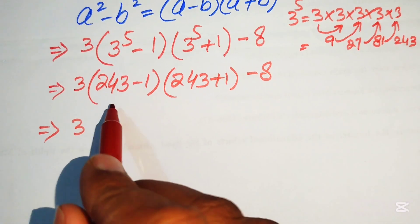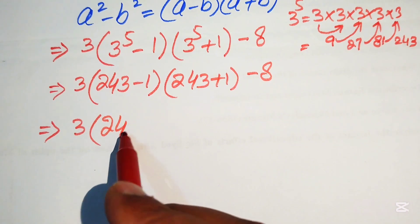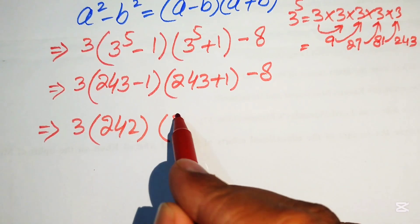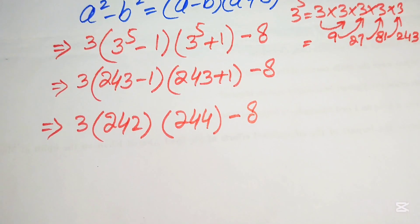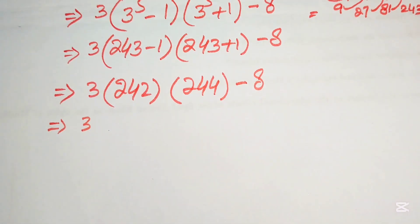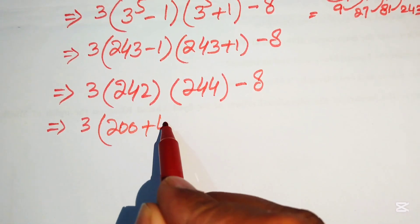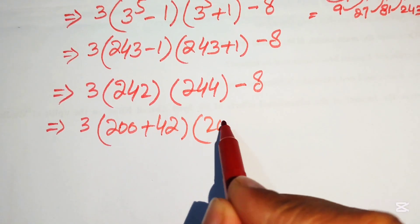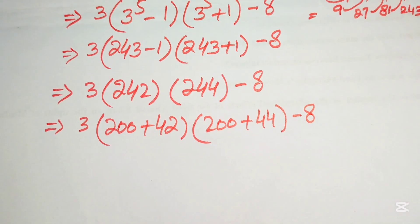Subtracting and adding: 243 minus 1 gives 242, and 243 plus 1 gives 244, minus 8. We then break these into 200 plus 42 and 200 plus 44 to make multiplication easier.